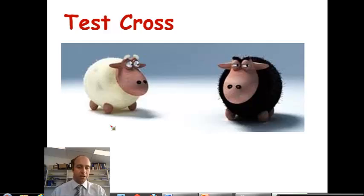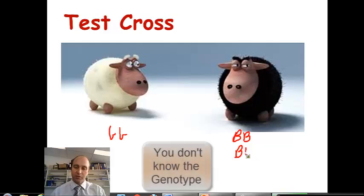And this white sheep here must have the genotype small b, small b, couldn't be anything else. Whereas a black sheep could be homozygous or it could be heterozygous and we really don't know.